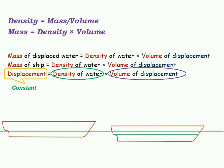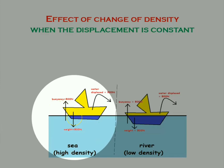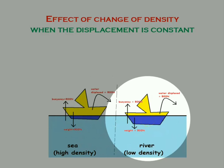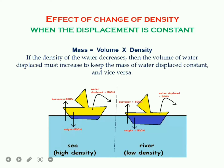Volume of displacement is inversely proportional to density. If density decreases, the volume of displacement must increase; if density increases, the volume of displacement must decrease. As shown in the picture, a ship moving from higher-density salt water into lower-density river water will have an increased underwater volume in the second case, because the ship has the same displacement in both cases. Due to the lower density, the ship must displace more water to experience the same buoyant force.